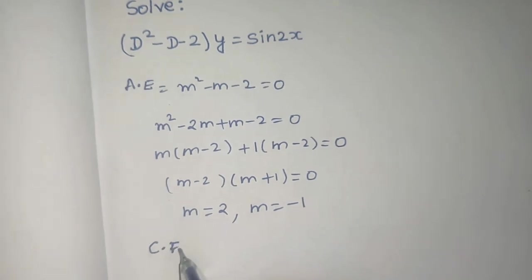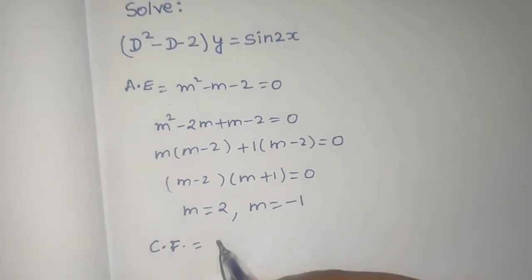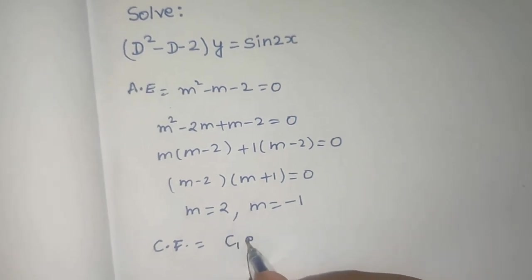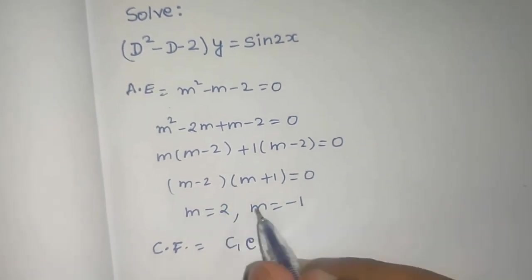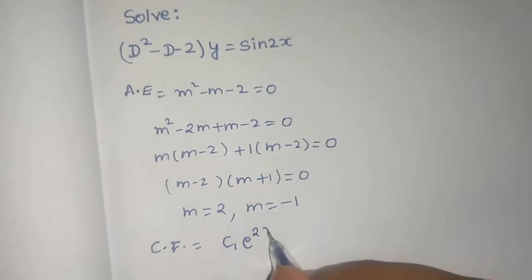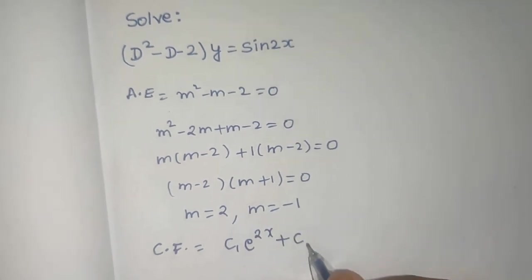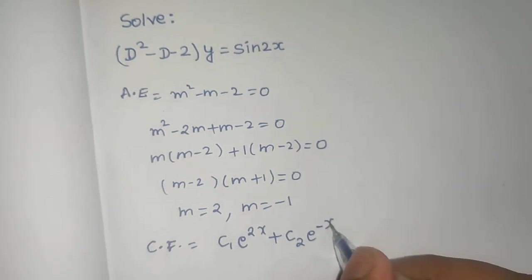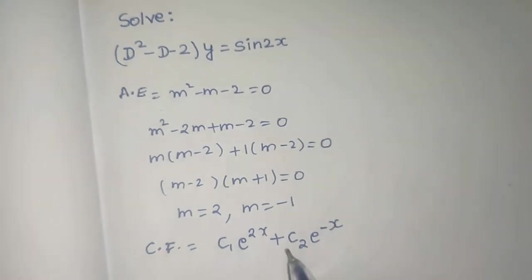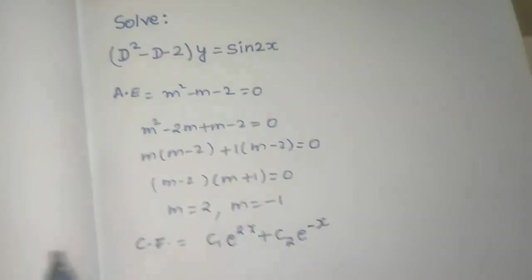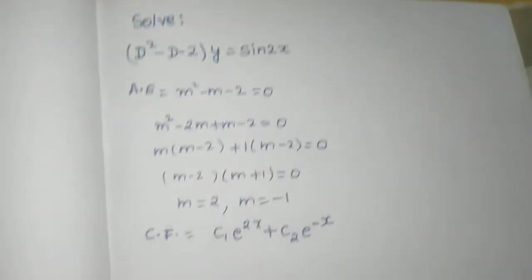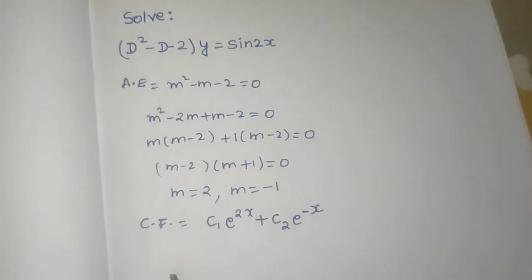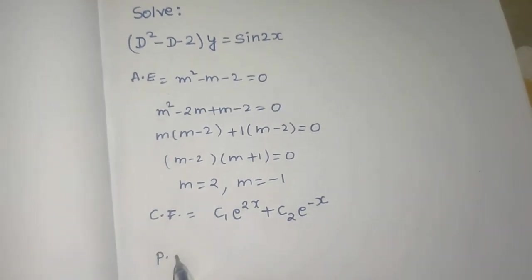From here we get m = 2 and m = -1. Since we have two distinct roots, the complementary function is CF = c₁e^(2x) + c₂e^(-x). The number of constants equals the order of the differential equation, which is 2 in this case.